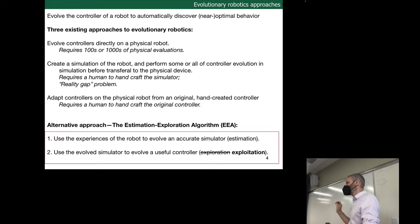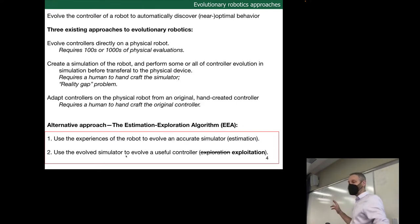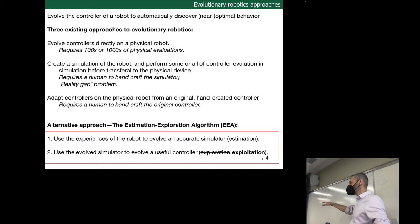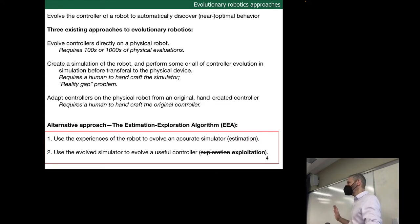We haven't actually got to the exploration part yet. Exploitation is the nickname for the second evolutionary algorithm, which is exploiting the evolved simulator to evolve controllers for the physical robot. So: estimation — estimate the robot's interactions with its environment, build that into a simulator. Exploitation — use the most accurate simulator to evolve controllers. There is a third piece to this algorithm, which is the exploration part. We will get there in a mere moment.